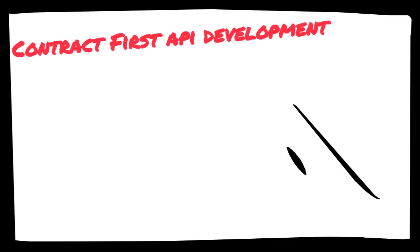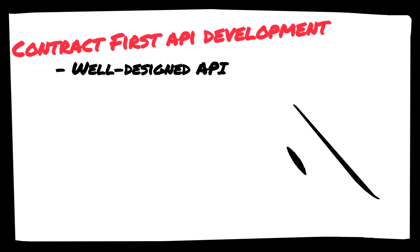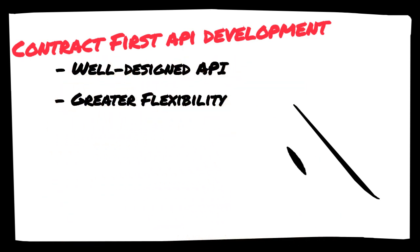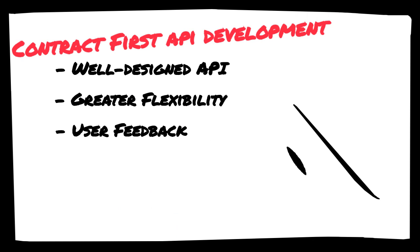There are many benefits of defining the API first. One: a well-designed API. Thought is put into creating the design from the user perspective before any code is written. The client UI can be developed against the API design before the API server code is complete, providing confirmation of user needs quickly.